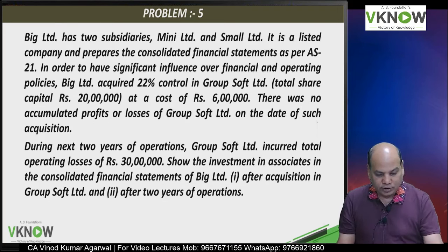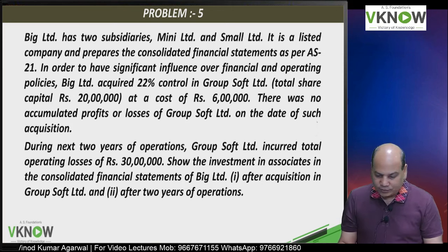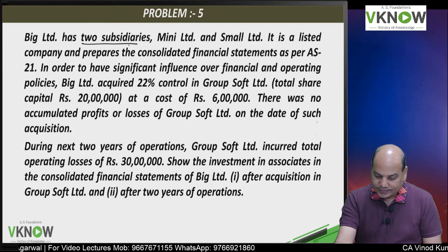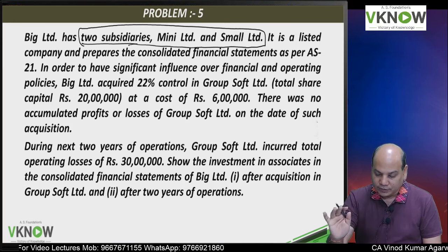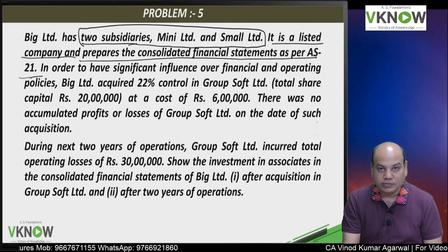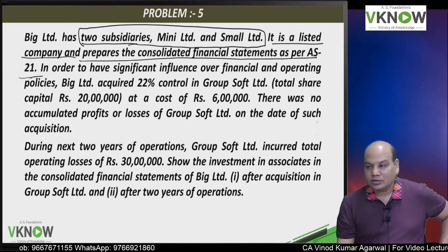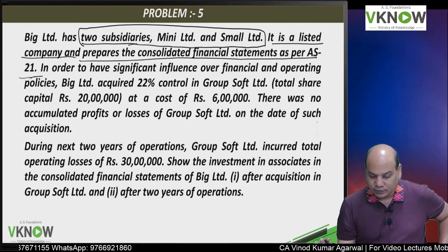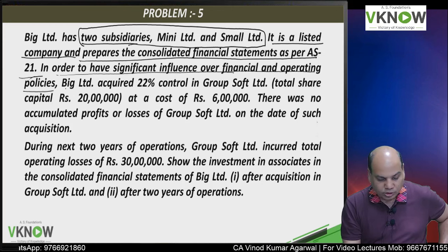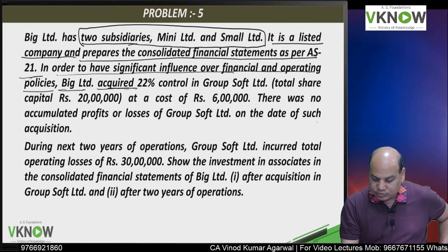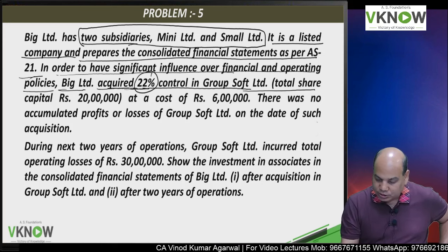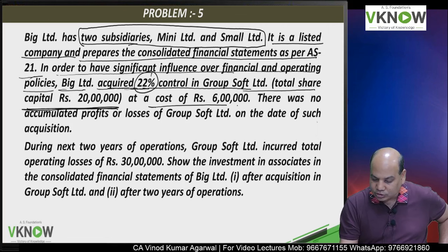We will go to question number 5, another important question. Big Limited has 2 subsidiaries — Mini and Small. It is a listed company and prepares consolidated financial statements. In order to have significant influence over financial reporting policies, Big Limited acquired 22 percent control of Group Soft Limited. The stake is 22 percent, total share capital is 20 lakh, at a cost of 6 lakh.